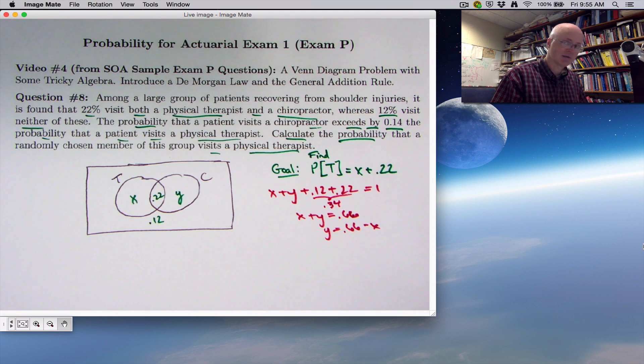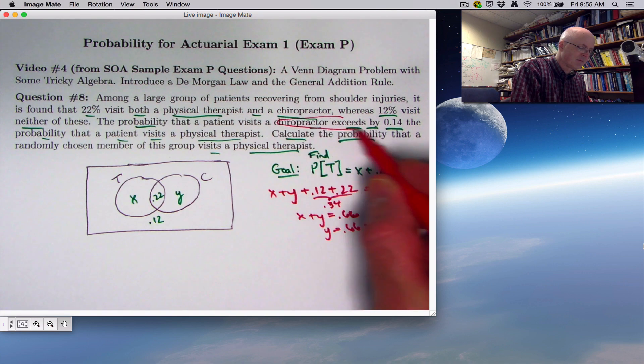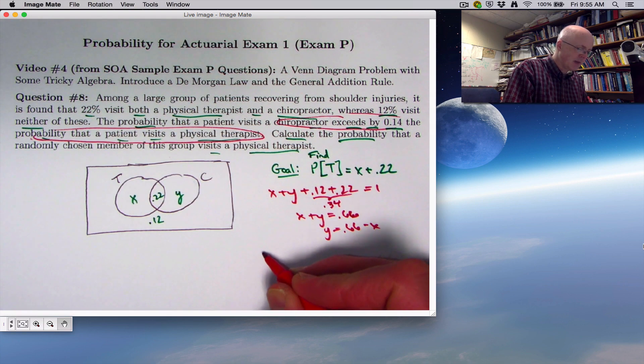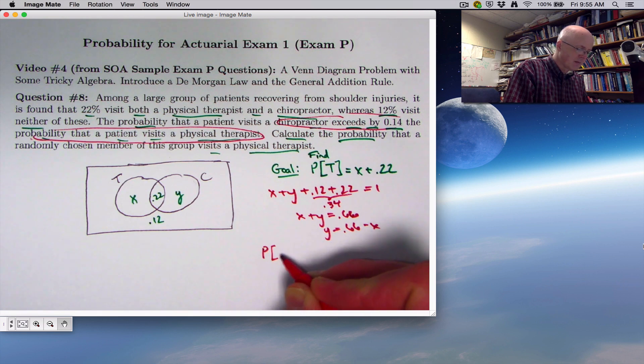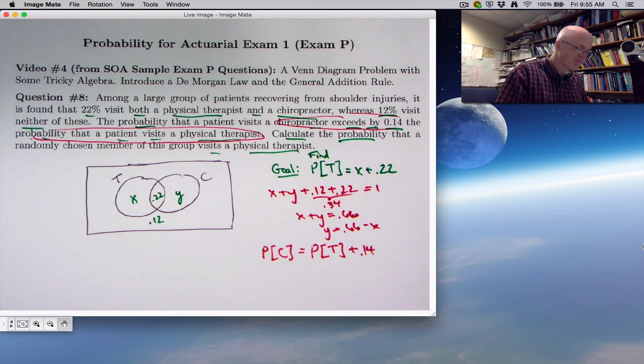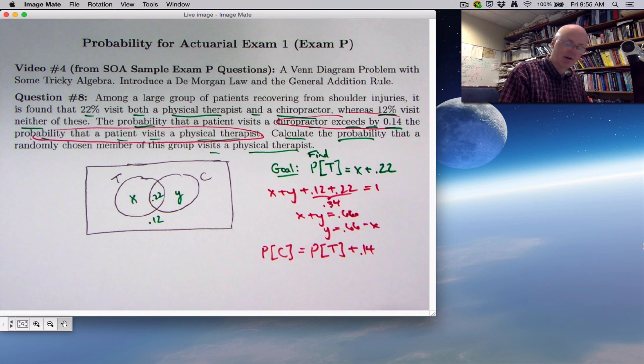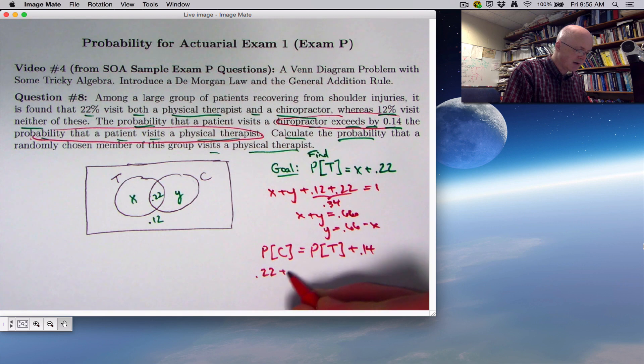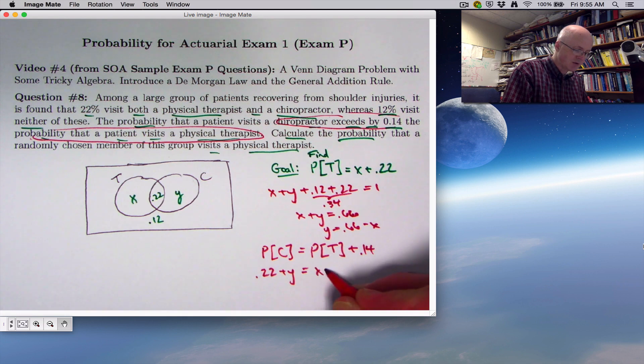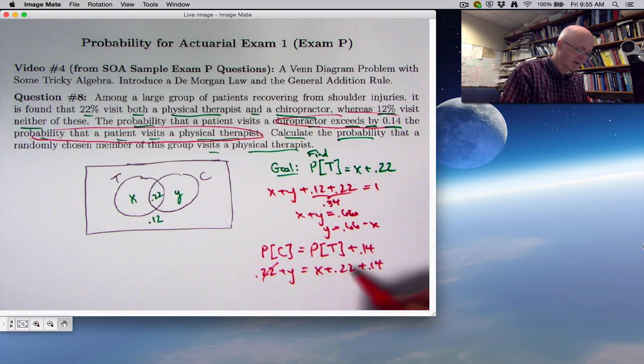Let's write down a couple of equations. We know that X plus Y plus 0.12 plus 0.22, which is 0.34, has to add up to one. That means X plus Y equals 0.66, so Y would be 0.66 minus X. The other equation relating X and Y is that the probability of visiting a chiropractor, which is 0.22 plus Y, exceeds by 0.14 the probability of visiting a physical therapist, which is X plus 0.22.